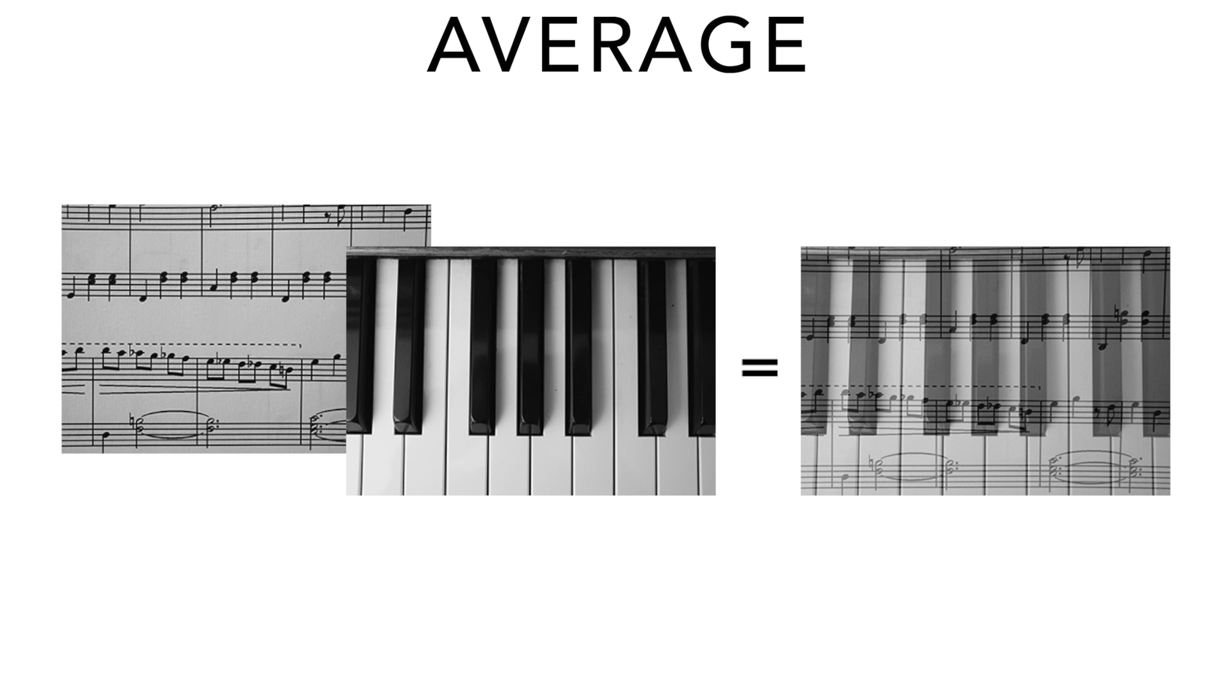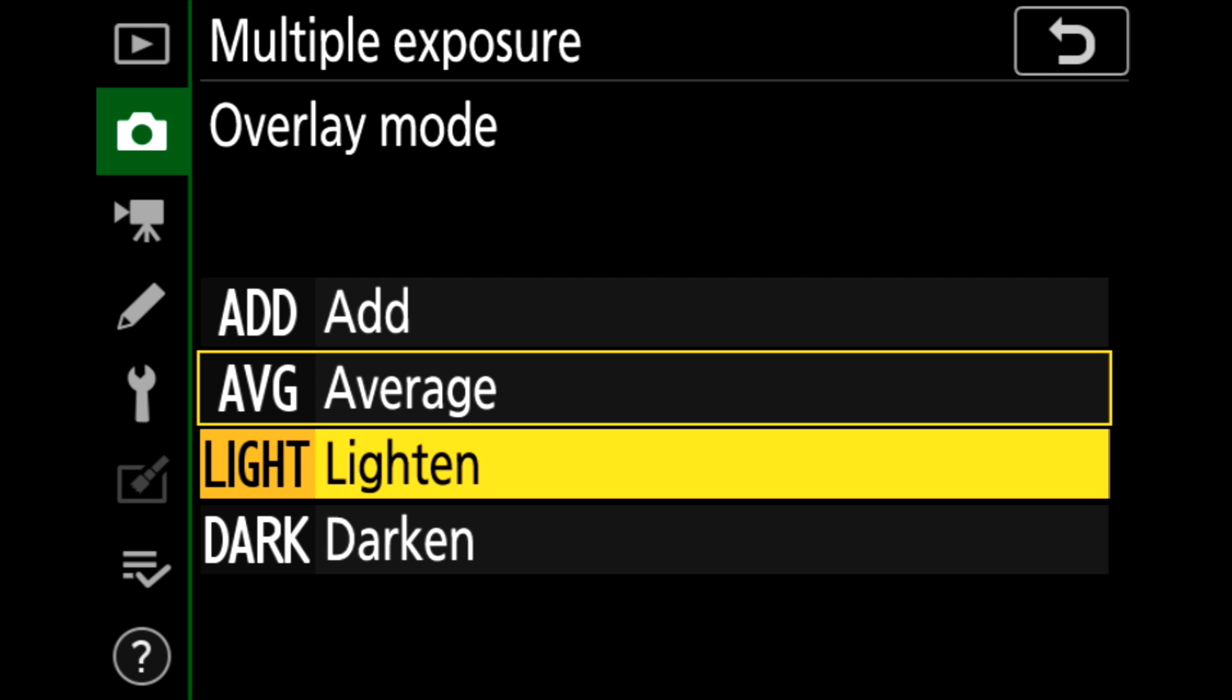We're now going to look at the bright or light method of multiple exposure blending. Based on the camera, they call it different things. Even within the same camera manufacturer like Fujifilm, some Fujifilm models call it bright, some call it light. Either way, it does the same thing. Just like as it sounds, this method is going to pick the brightest RGB value at each pixel location and then use that in the final blended exposure.